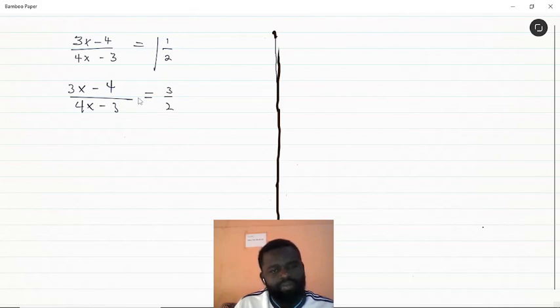The first step was converting the mixed fraction. Now we can do cross multiplication because we have only two terms. This multiplies by that, and this multiplies by this. So we get 2 multiplying 3x minus 4.